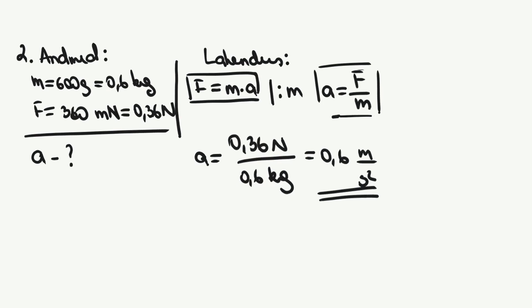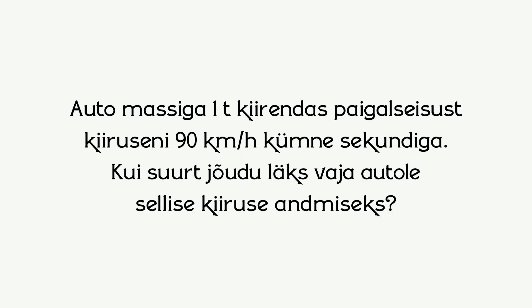Lahendame teise seaduse kohta viimase ülesande. Auto massiga 1 tonn kiirendab paigalseisust kiiruseni 90 km tunnis 10 sekundiga. Kui suurt jõudu läks vaja autole sellise kiiruse andmiseks? Pane video pausile ning lahenda ülesanne ise iseseisvalt. Seejärel vaata videot lahenduskäigu kinnistamiseks edasi ja kontrolli oma vastust.